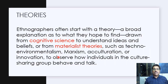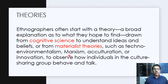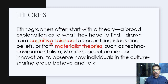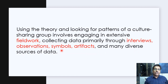Ethnographers generally start with a theory — a broad explanation of what they hope to find. This could be drawn from cognitive sciences about understanding ideas and beliefs, or from materialist theories such as techno-environmentalism, Marxism, acculturation theories, or theories about how innovations are diffused in groups. They also observe how individuals in the culture-sharing group behave and talk. Using theory and looking for patterns is what the researcher does in participant observation.